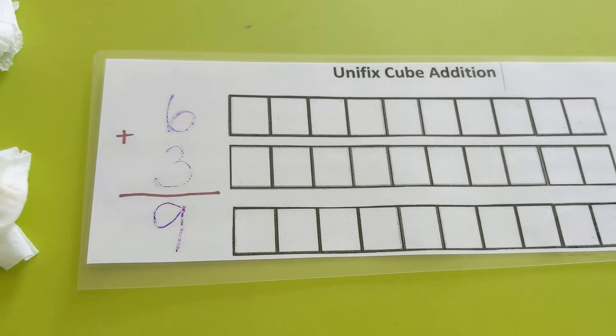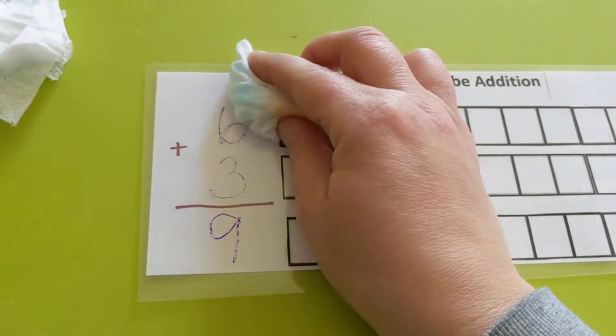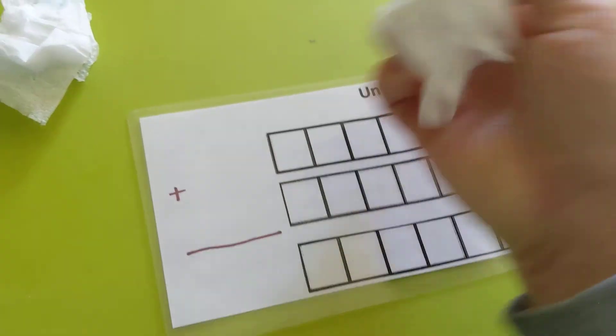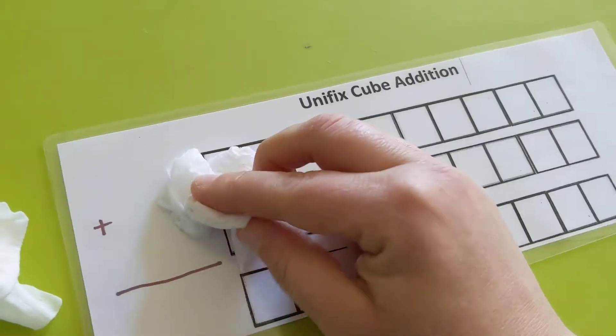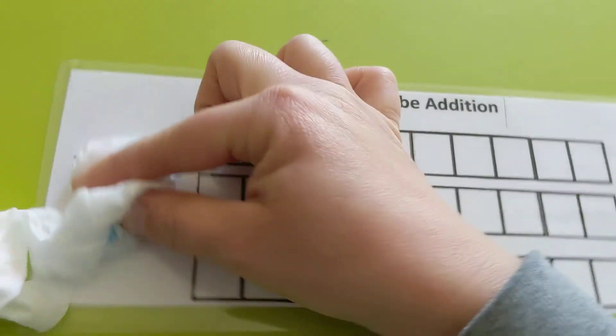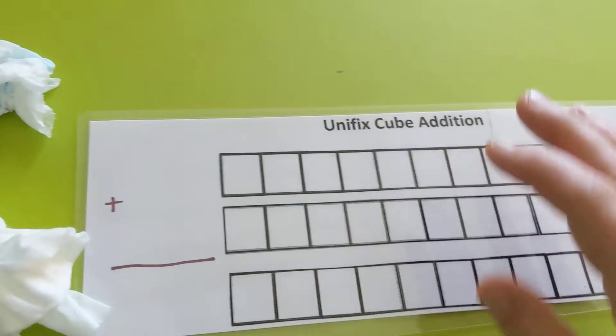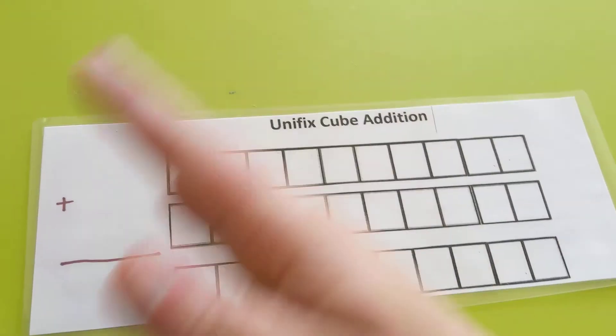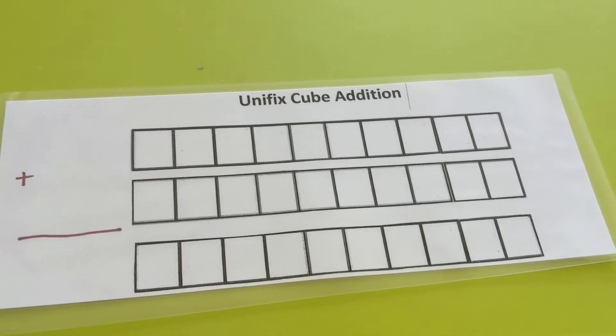We can move off our Unifix Cubes. We get our wet one and we're going to wipe it clean. And it's a little damp, so I like to dry it off. You can give a little blow if you want to. So that's going to dry. Blow some air on it. Let's do another one.